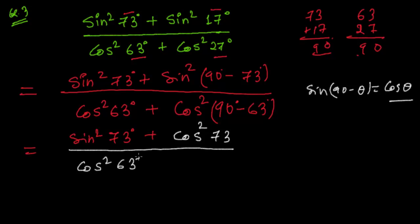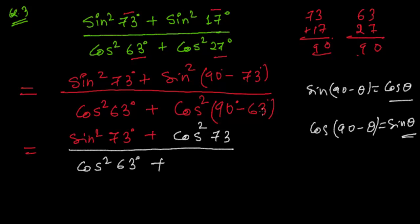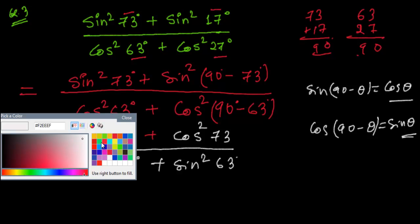For the denominator, cos(90° − 63°) — we already know that cos(90° − θ) = sin θ. So cos²(90° − 63°) becomes sin²63°. The denominator is now cos²63° + sin²63°, which is a familiar form.